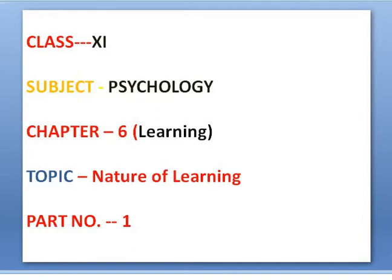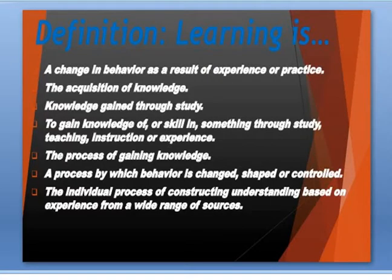In this chapter, we will focus on learning as a psychological process. An account is presented that explains how one learns, covering a number of learning methods that account for simple to complex types of learning. We will also discuss the factors that determine the speed and extent of learning, including different learning styles and learning disabilities.